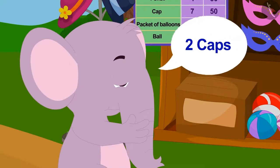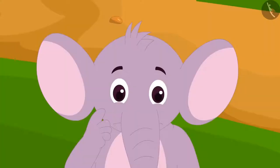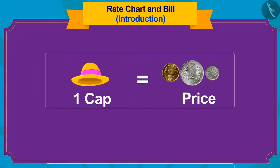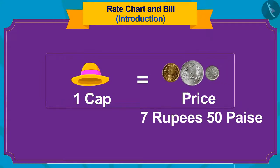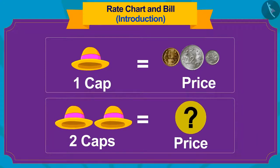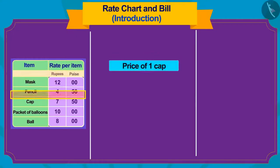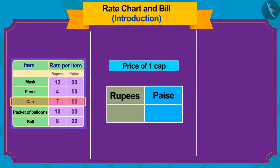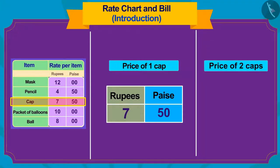Appu has to buy two caps. Appu is thinking that the price of one cap is 7 rupees 50 paise. So how much will two caps cost? Come, let us help Appu. First, we will write the price of a cap in rupees and paise. Now, what do we need to do to find the price of two caps?